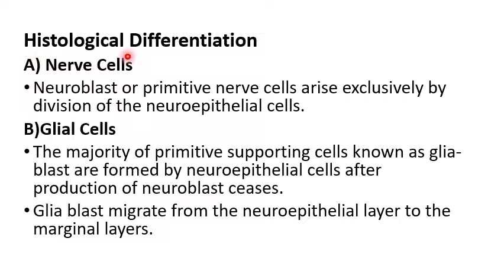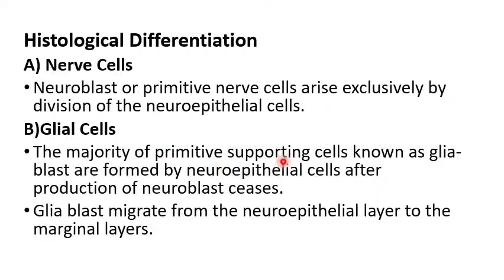Histological differentiation of the neural tube: neuroblasts or primitive nerve cells arise exclusively by division of the neuroepithelial cells. Glial cells are the supporting cells; the majority of primitive supporting cells known as gliablast cells are formed by the neuroepithelial cells after the production of neuroblasts.